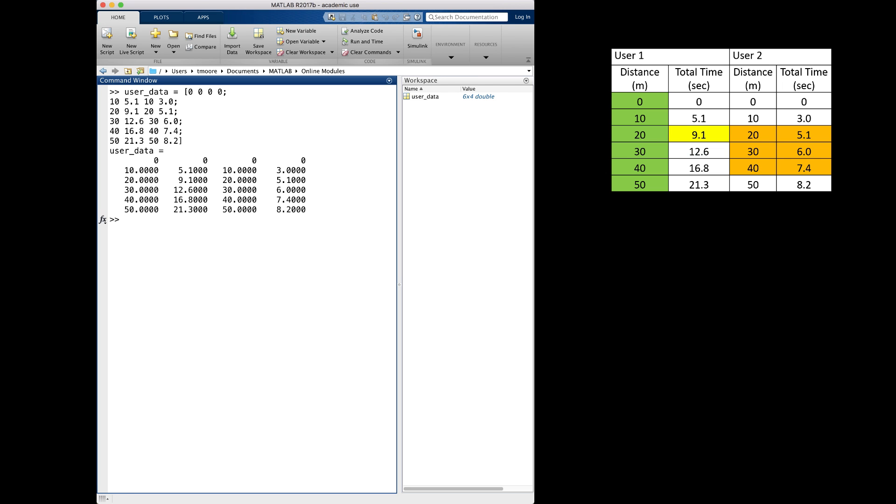In MATLAB, I have entered the original data in a variable named user_data. It is a good practice to copy pieces of any array to new variables if they are going to be used in other computations. This makes it easier for someone else to follow the code. I will use array indexing to create a variable for the value in yellow at the right. I want to copy user 1's time value at 20 meters, which is 9.1, to a variable called user1time20m.